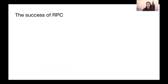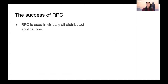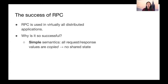RPC has of course been hugely successful. Many of today's distributed applications are built on RPC, including everything from specialized frameworks like distributed TensorFlow to microservices applications that capture custom business logic. So what exactly are the reasons for its success? First, there's the simple but powerful semantics. Request-response is a very flexible and low-level abstraction that's useful for almost any distributed application.